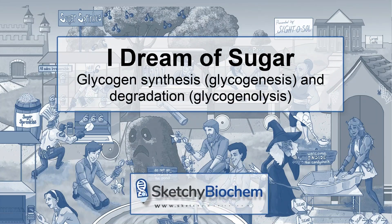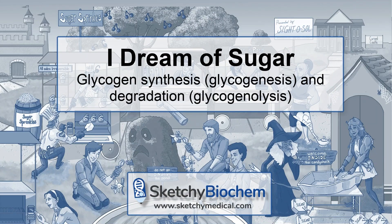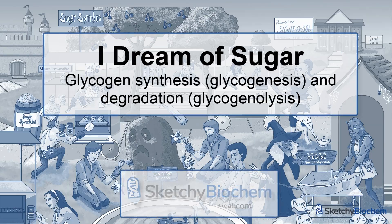If you've ever wondered why you can go without eating for a while without collapsing due to low blood sugar, you can thank glycogen. Glycogen serves as a fuel reserve during the early stages of fasting. In this sketch, we'll visit the beloved sugar street at Sketchyland to explain how glycogen is made and degraded.